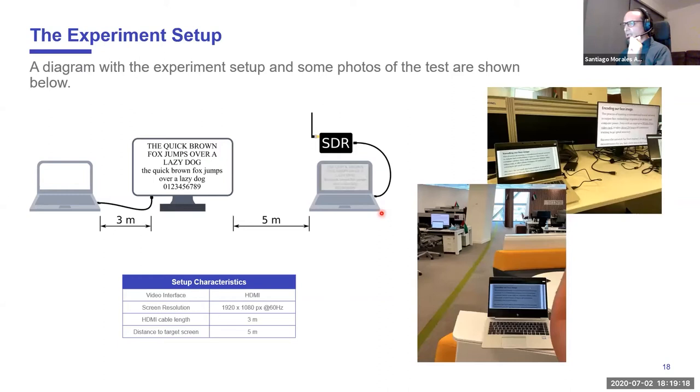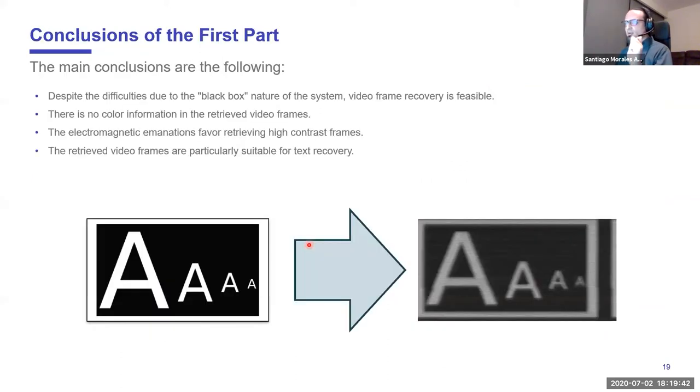Now here I'm showing you a little experiment. The setup here shows an HDMI interface, and we can see that at five meters we are recovering video frames. It is evident here that we can see what the display monitor is showing. The conclusions of this first part are: we cannot recover color, but this doesn't matter because for recovering text, this system is very suitable because normally text is high contrast information. Text is black in front of a white background, and this tool will work very good for this. So having this in mind, I give the floor to Juan, who is going to explain how we can recover text from this.